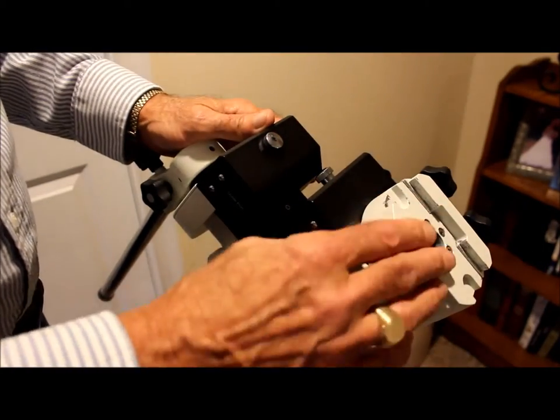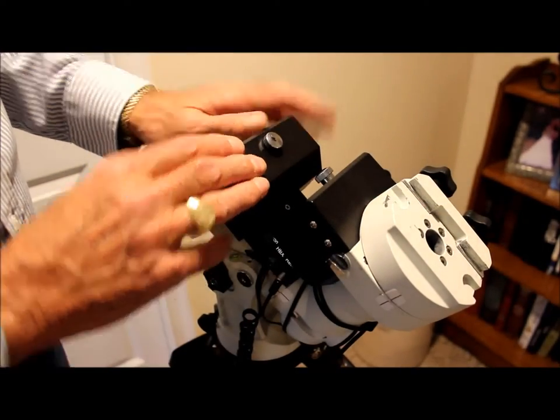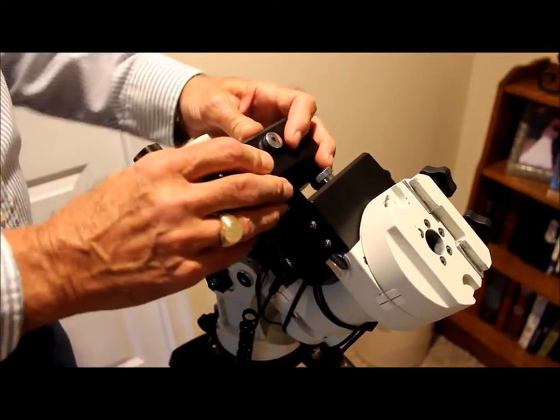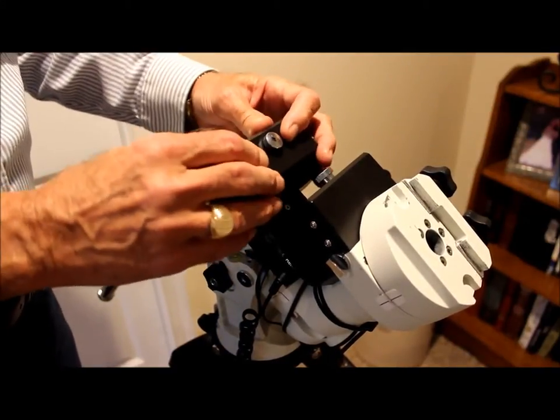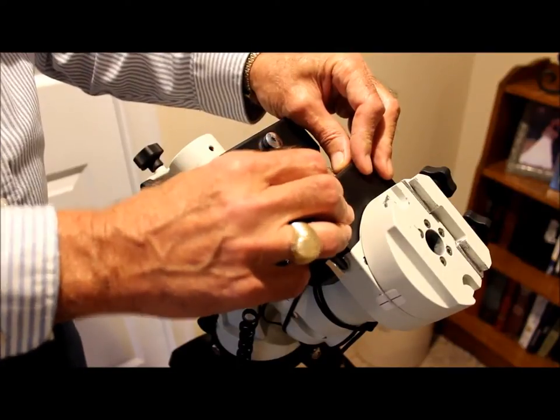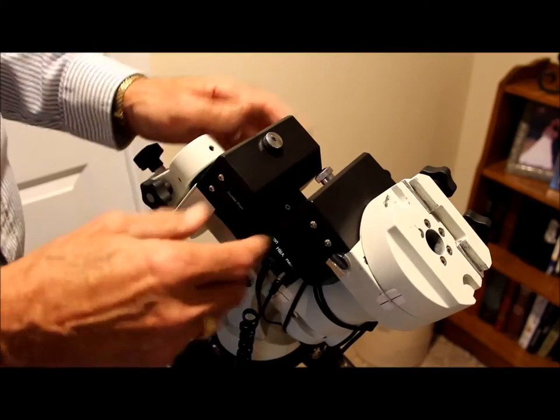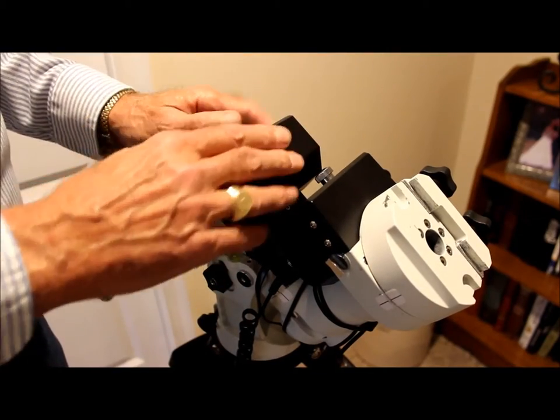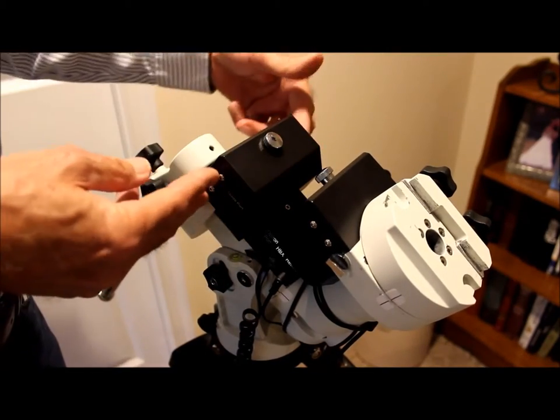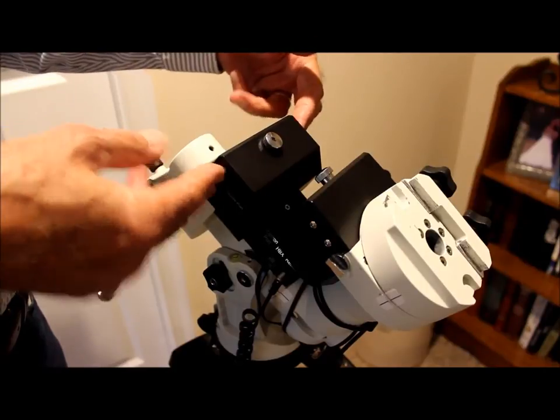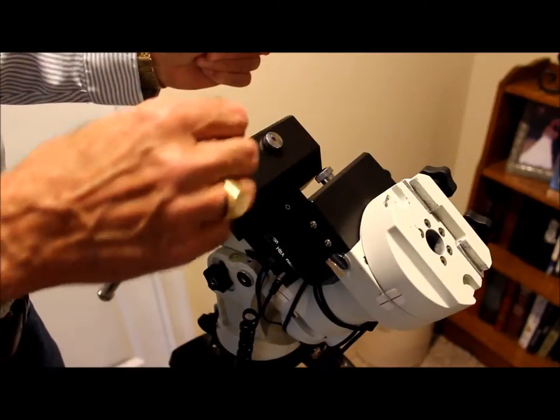So what we're going to do is start here on this RA housing. I'll show you everything on the RA worm assembly, and it will be the same for declination, except we're not going to repeat it twice. So first we'll remove this RA cover and tension screw, just four Allen screws holding it on. Be right back.